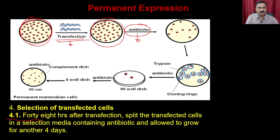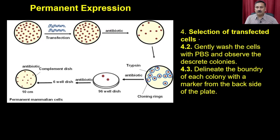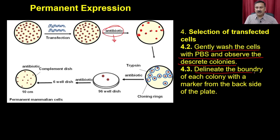For selection of transfected cells, 48 hours after transfection, split the transfected cells in a selection media containing antibiotic and allow them to grow for another four days. This kills most of the non-transfected cells and allows the proliferation of transfected cells. Then gently wash the cells with PBS and observe discrete colonies. These colonies are transfected cells that did not die even with the antibiotic, because the vector is providing them resistance. Delineate the boundary of each colony with a marker from the back side of the plate.